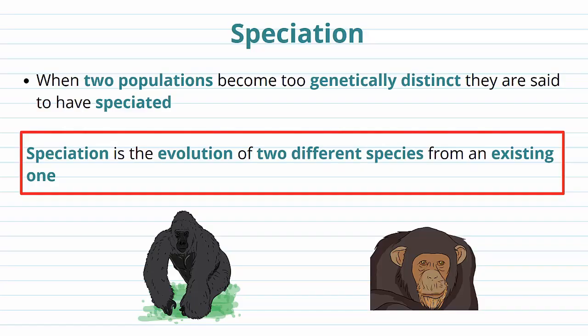Speciation is basically the formation of two different species. If two populations become two genetically different or distinct, then we say they have speciated — they've become two separate species. Basically, when speciation occurs, we have two different species evolving from an existing one.